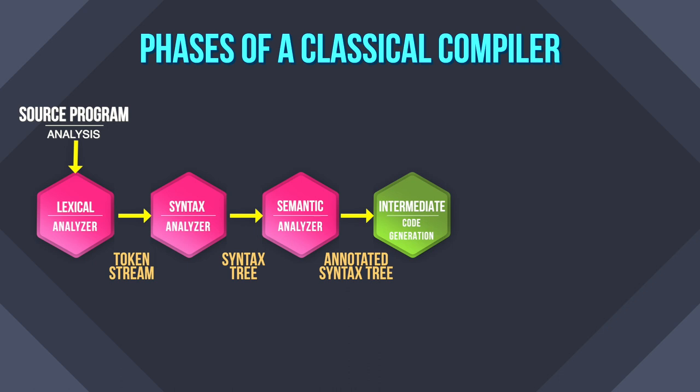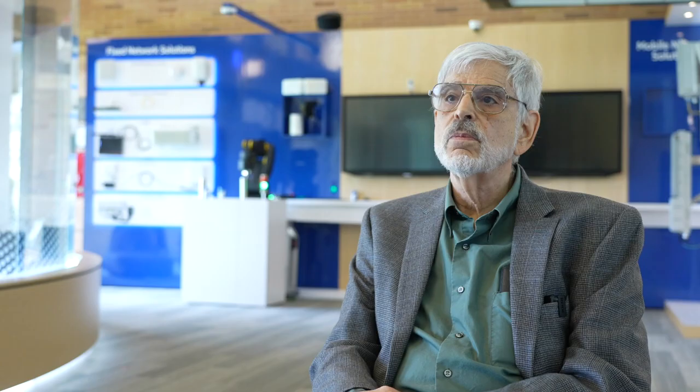If we look at a compiler, it really consists of a front end where you do analysis of the source program — lexical analysis, syntax analysis, semantic analysis — and map it into some kind of intermediate representation. Then you have a back end that maps the intermediate representation into code that can be executed by the underlying computer.